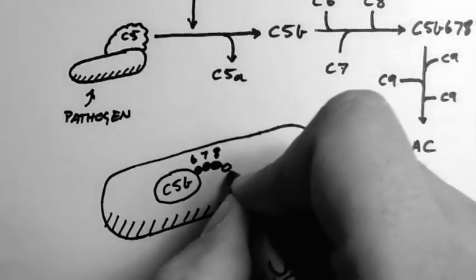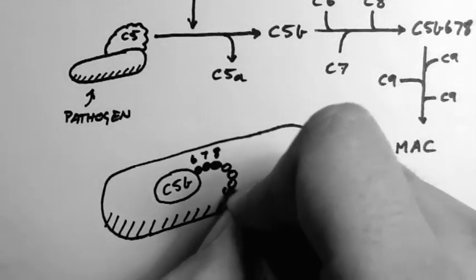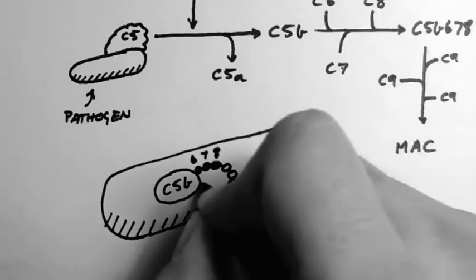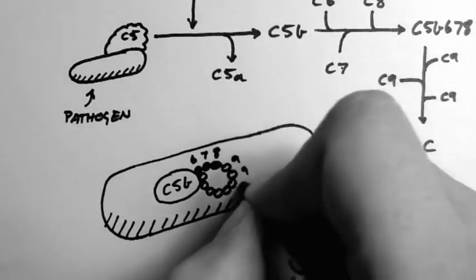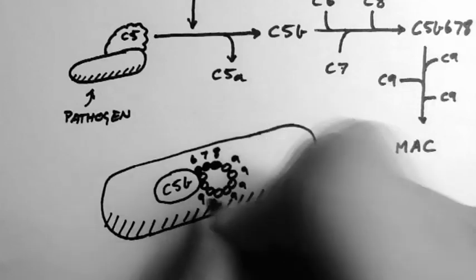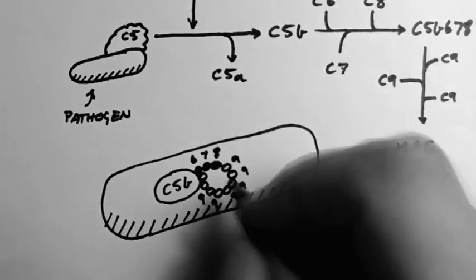Then a series of C9s polymerize into this ring formation. These are all C9 molecules until it creates a circular pore.